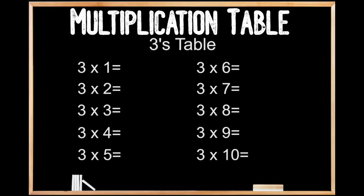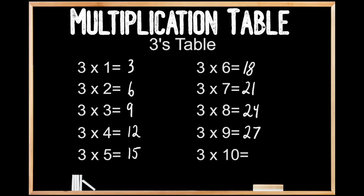3's table. 3 times 1 is 3. 3 times 2 is 6. 3 times 3 is 9. 3 times 4 is 12. 3 times 5 is 15. 3 times 6 is 18. 3 times 7 is 21. 3 times 8 is 24. 3 times 9 is 27. And 3 times 10 is 30.